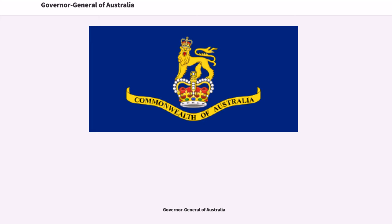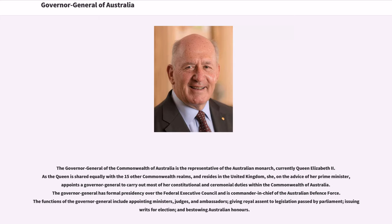The Governor-General of the Commonwealth of Australia is the representative of the Australian monarch, currently Queen Elizabeth II. As the Queen is shared equally with the 15 other Commonwealth realms and resides in the United Kingdom, she, on the advice of her Prime Minister, appoints a Governor-General to carry out most of her constitutional and ceremonial duties within the Commonwealth of Australia.